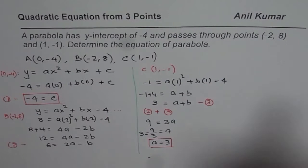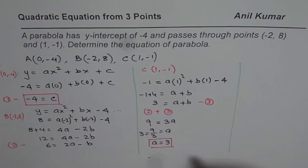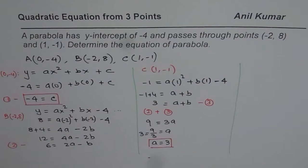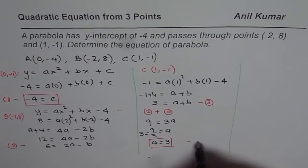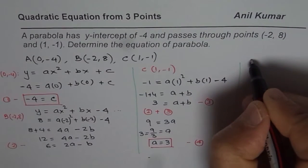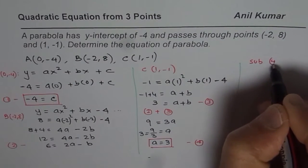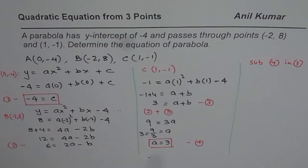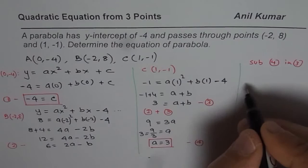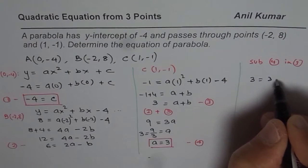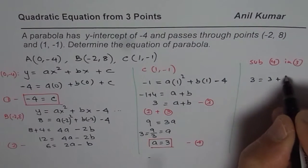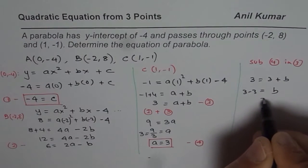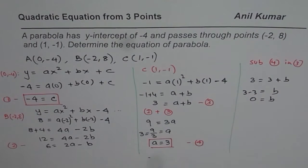Now let's find the value of B. We can substitute A equals 3 into equation 3: 3 equals 3 plus B, so 3 minus 3 equals B, giving us B equals 0.